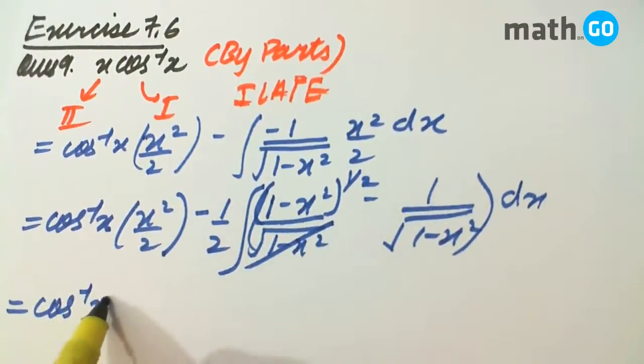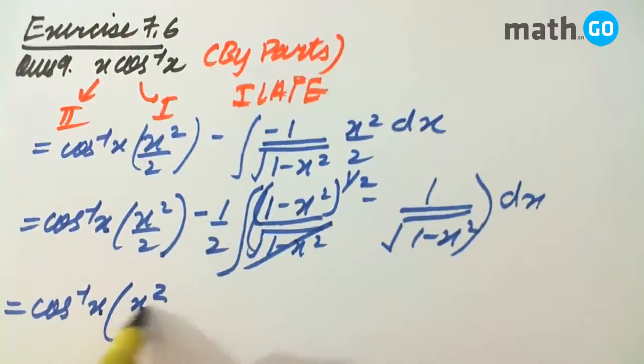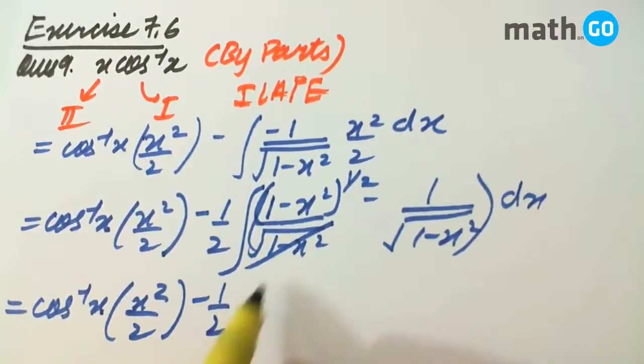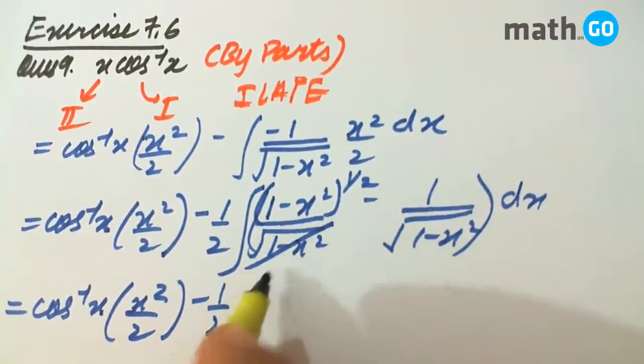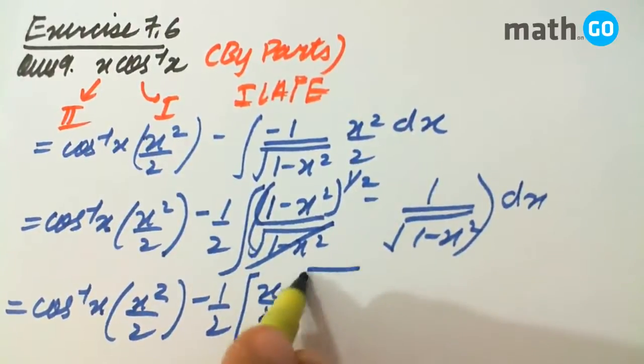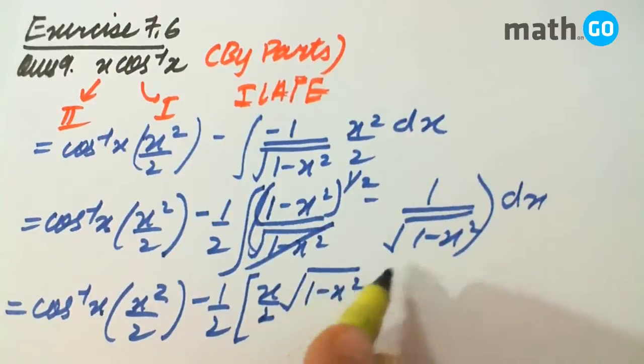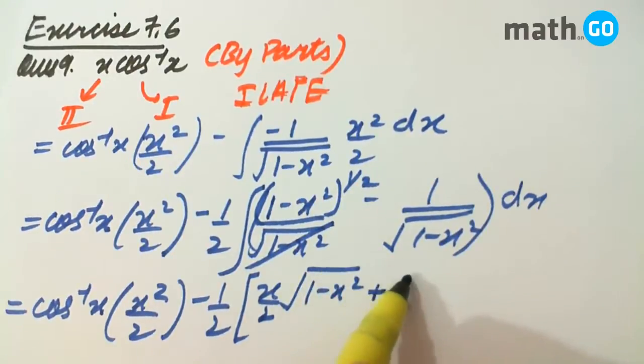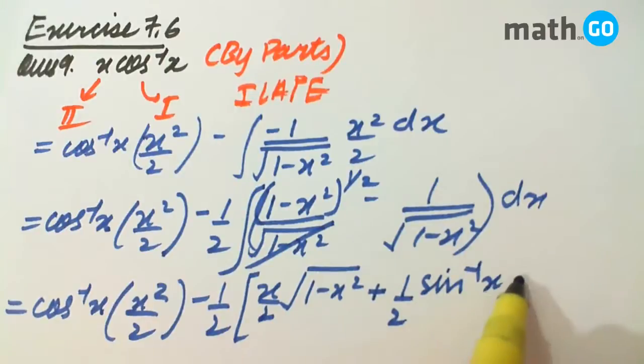Then, what will we get minus half iski integration is what? x by 2 root of 1 minus x square plus 1 by 2 sin inverse x. And this is nothing but minus sin inverse x.